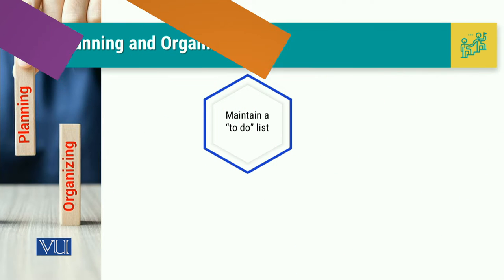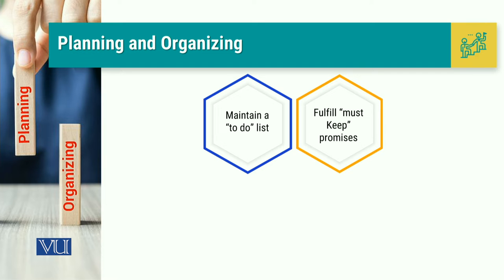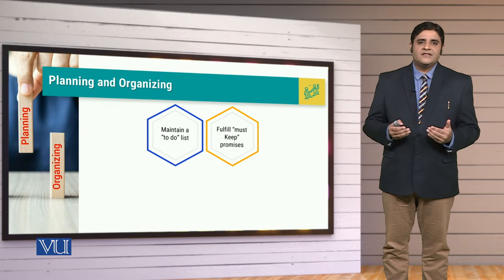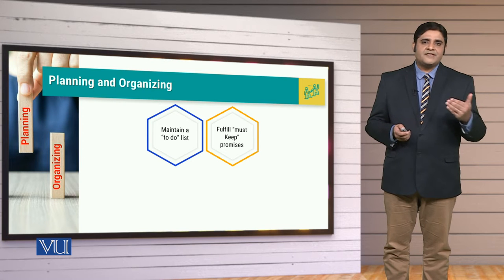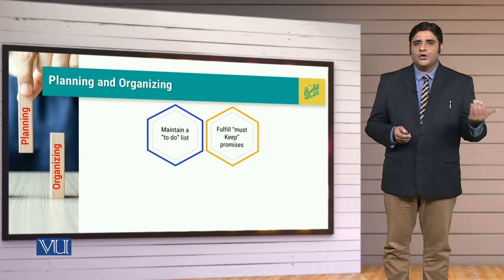Secondly, remember that you have to plan and get yourself organized. When you talk about planning and organizing, you have to maintain a to-do list. So that you have to fulfill must-keep promises and one must not be breaking the promises. Therefore, just be — with your stakeholders, whatever kind of dealing you have, whatever promise you have made, whatever expectations there are, meet them.